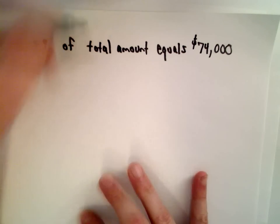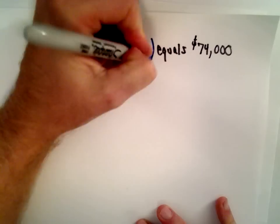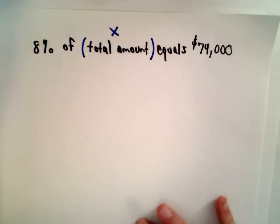Well, the total amount, that's what we don't know, right? We don't know this total amount, that's what we're trying to figure out. So I'm going to call it x. It's some amount, we don't know.